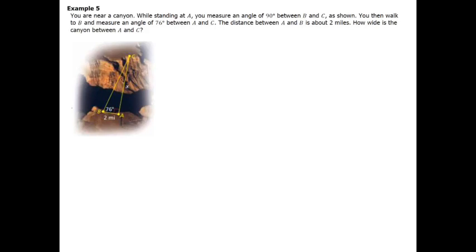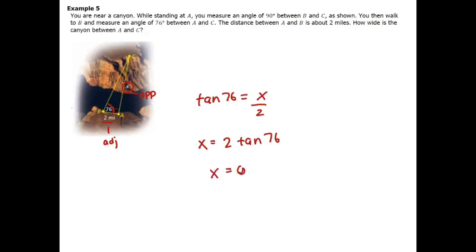Example five: we're near a canyon, standing at point A, and we measure a 90-degree angle between points B and C. The distance from A to B is about 2 miles, and we want to find how wide the canyon is from A to C. The 2-mile side is adjacent to the 76° angle, and x is opposite, so we use tangent: x equals 2 times tangent of 76°, which gives approximately 8.02 miles.